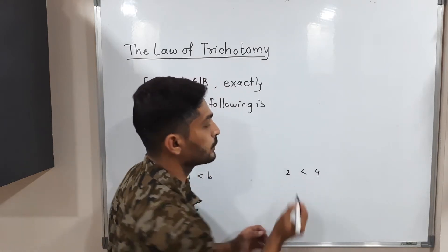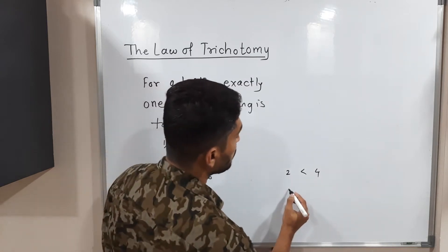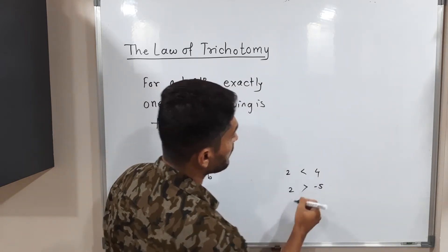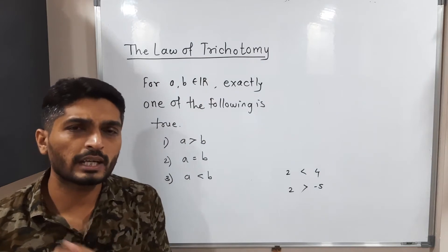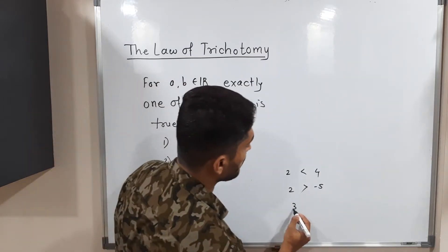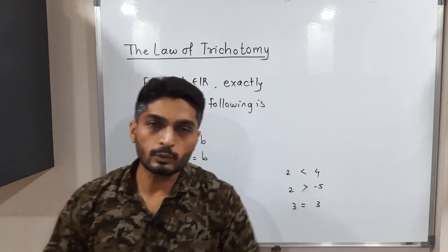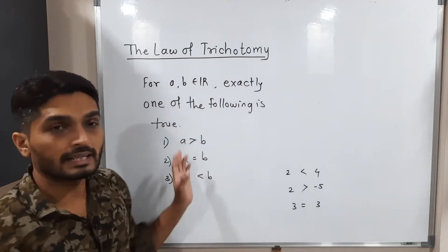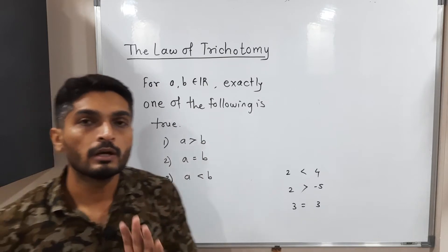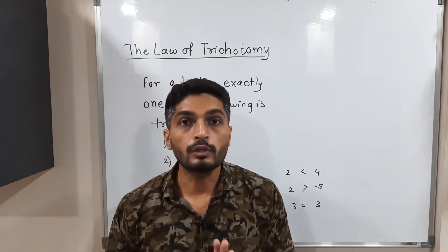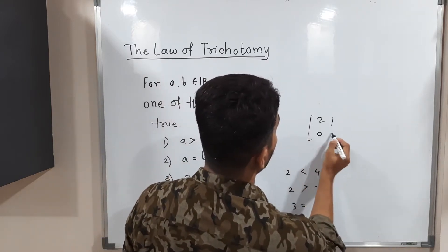For example, we can write 2 is less than 4, or 2 is greater than −5, or if you take 3 and 3, both are equal. So if you select any two real numbers, exactly one of these three relations will hold.